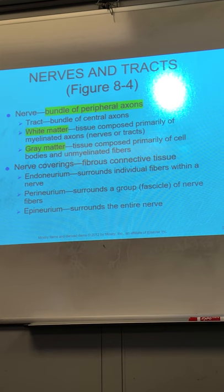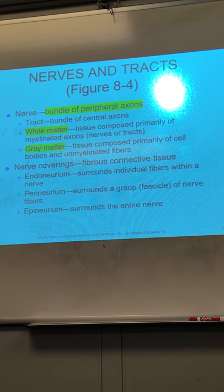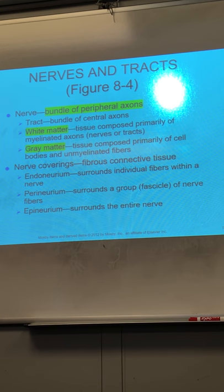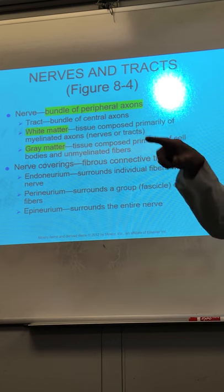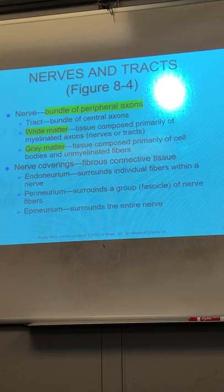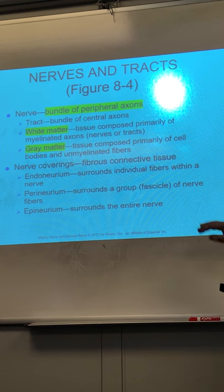So saltatory conduction helps you correlate and remember it more easily. There are nodes spaced regularly in the myelin sheath known as the nodes of Ranvier, and the impulse will jump from node to node — that is saltatory conduction.